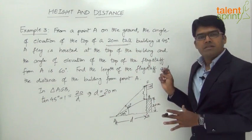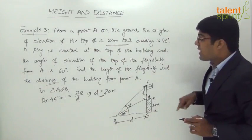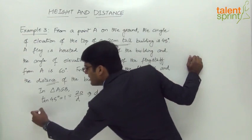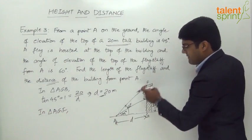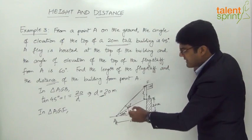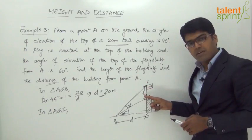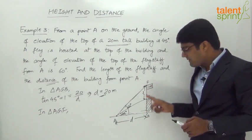Now for the length of the flag staff, we consider right-angle triangle AGF. In this triangle, the angle at A is 60 degrees. The total height from the ground to the top of the flag staff is 20 + L, where L is the length of the flag staff and 20 is the height of the building.